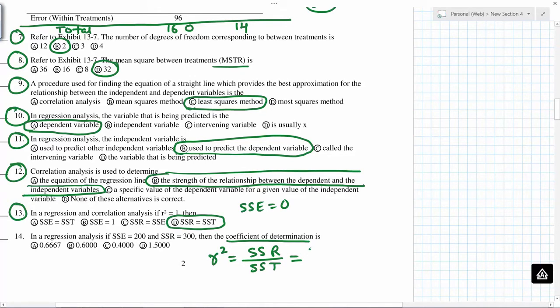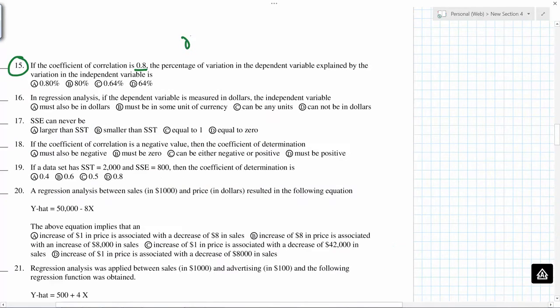SSR is 300 and SST will be 200 plus 300, 500. r equals 0.8, so r square, which is coefficient of determination will be 0.64 or 64%.